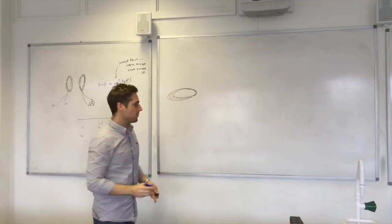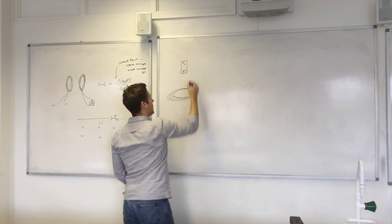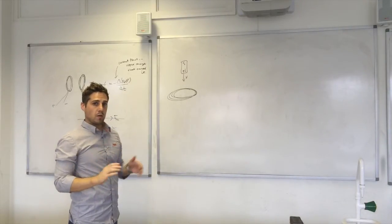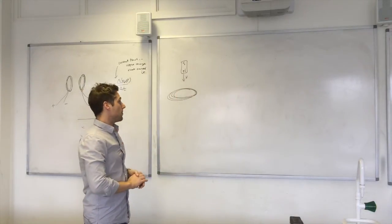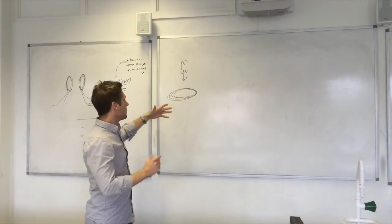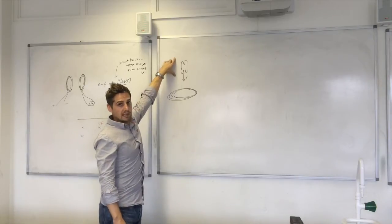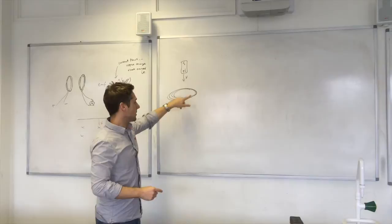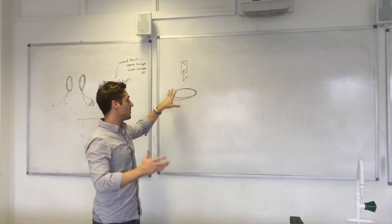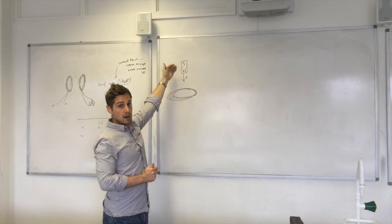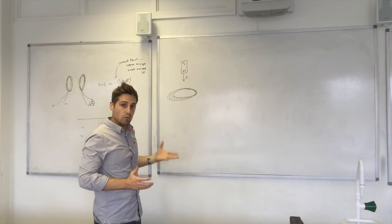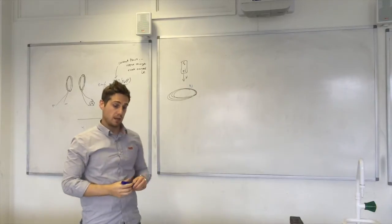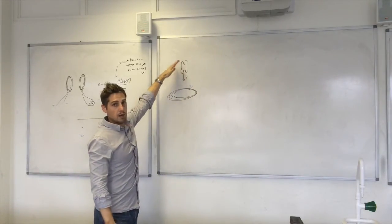Let's take a horizontal coil and drop a magnet through it. The current flows in such a direction as to oppose the change that caused it. The change that caused it is the magnet moving towards the coil. What can the coil do to oppose that? A current flowing in a coil produces an electromagnet, so whilst the magnet is above the coil, the coil will repel the magnet — setting up a north pole on the top of the coil, applying a braking force to the magnet.